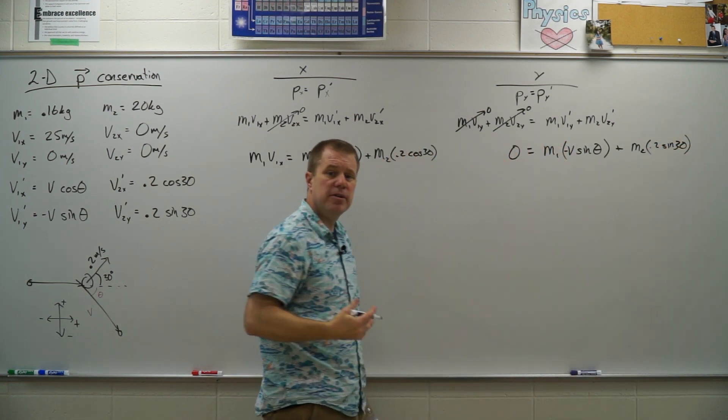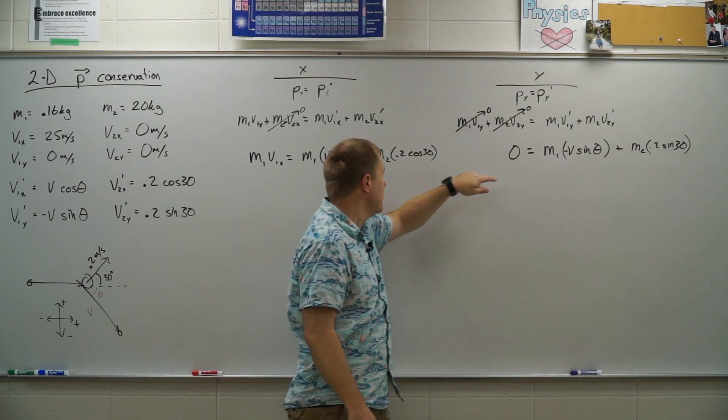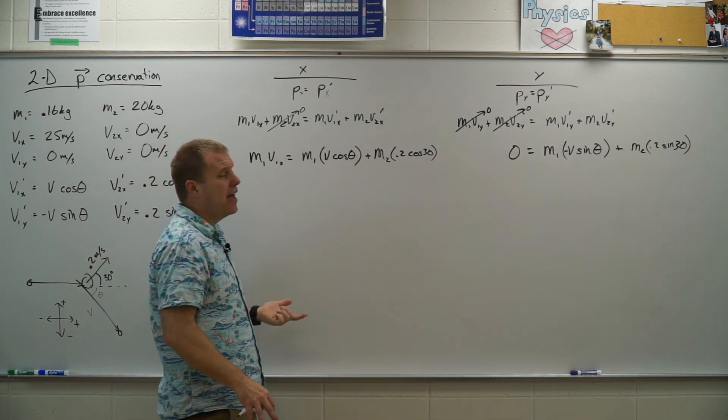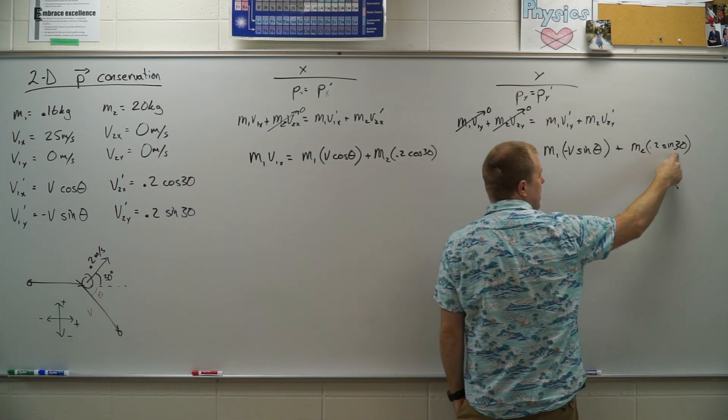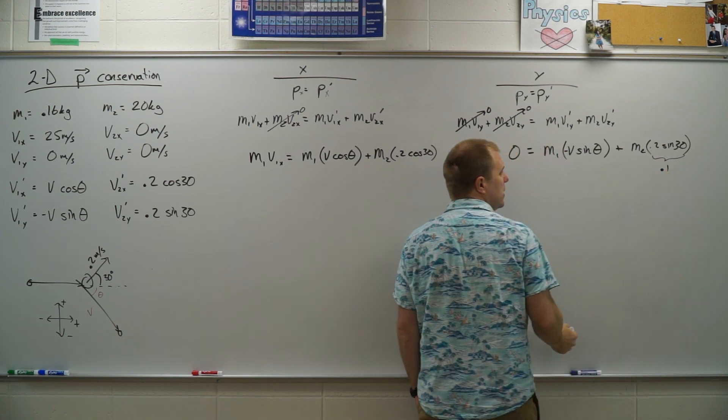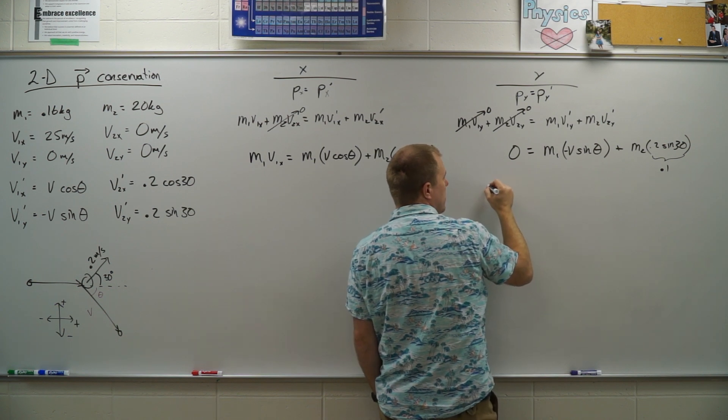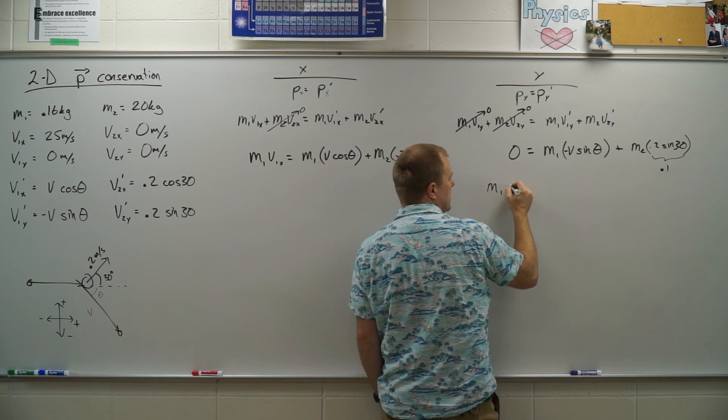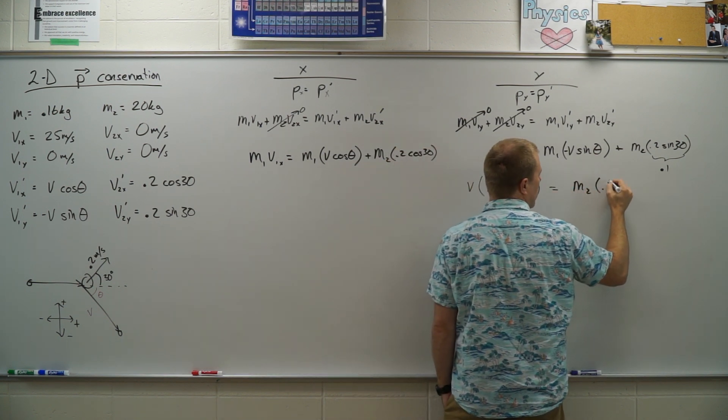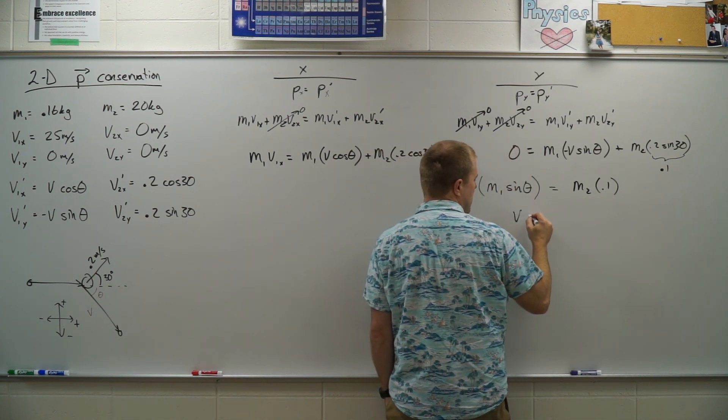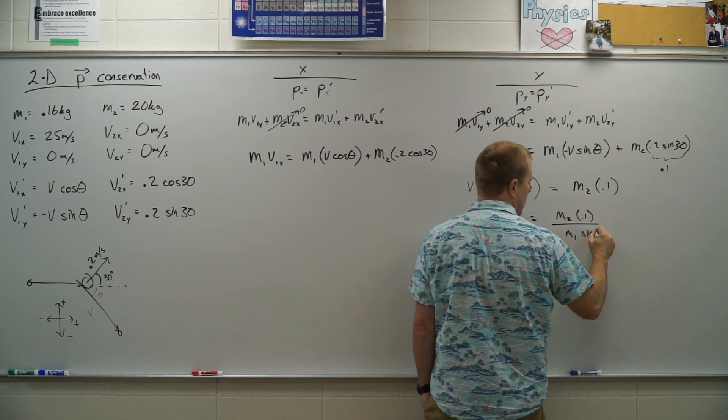So what I'm going to do here is I'm going to solve for V in this equation and then substitute it in here and then either use solver or see what happens. So we're going to move this over to the other side. 0.2 times sine 30 equals 0.1. And so now I have, well, actually we'll move this one over so we can get rid of the negative sign. So I have M1 sine theta times V equals M2 times 0.1 divided over. So now I have V is equal to M2 times 0.1 divided by M1 sine theta.